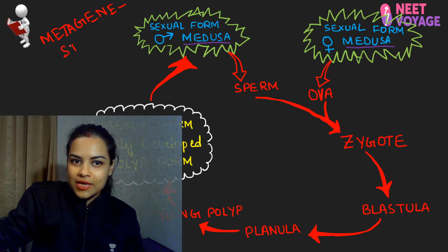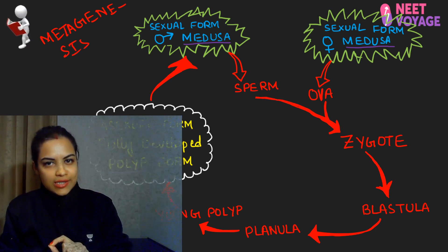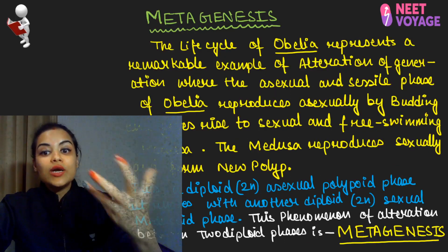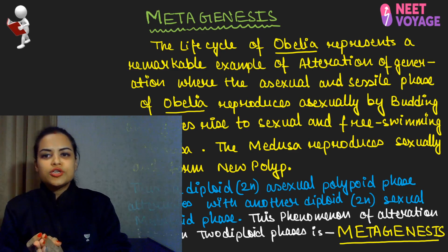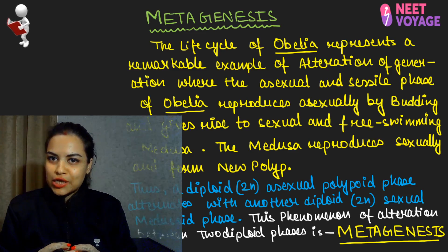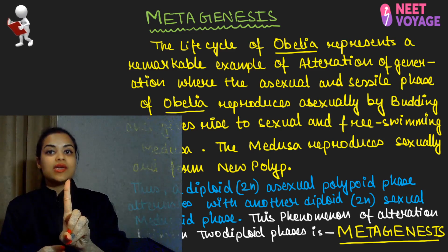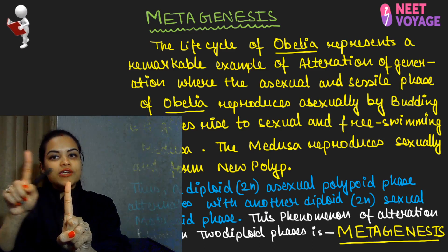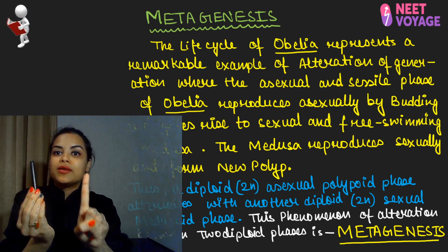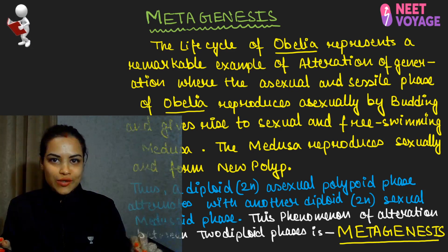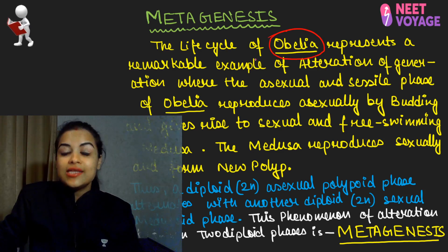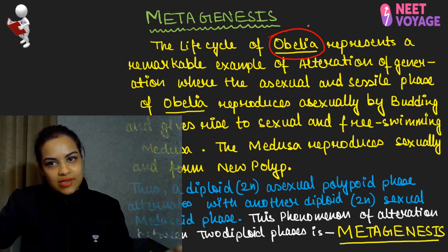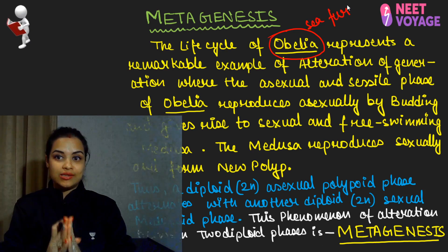What is metagenesis? In simple form, metagenesis is also known as alteration of generation. We have studied alteration of generation — so metagenesis and alteration of generation are the same thing. You may have also studied metagenesis in botany. When a single individual shows two different forms in its life cycle, that is metagenesis. For example, consider obelia — it is a member of Nidaria, the second phylum of Animal Kingdom. The common name of obelia is sea fir, and it shows metagenesis, that is alteration of generation.